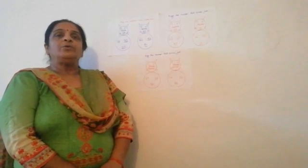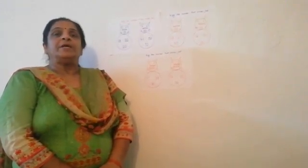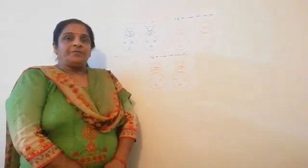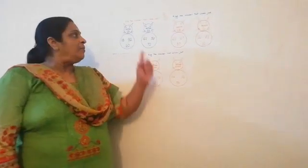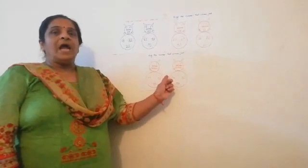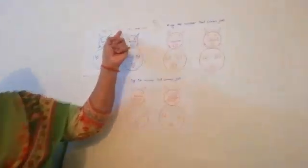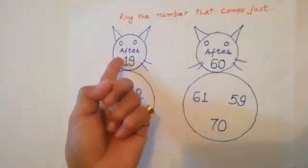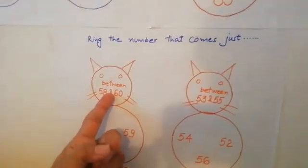Today we are going to do page number 4 in primary mathematics. Our concept is what number comes after, before, and between. I will show the numbers and you will ring the number that comes just after, before, and between. Okay.